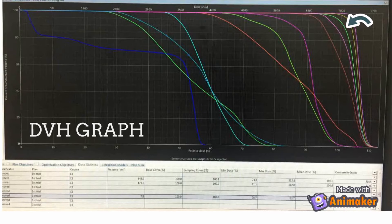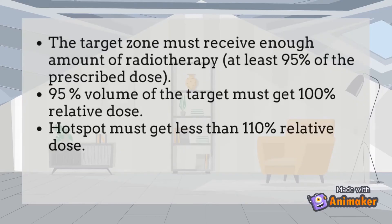The target zone must receive enough radiotherapy — at least 95% of the prescribed dose. 95% of the volume of the target must receive 100% of the relative dose. The hotspot must receive less than 110% of the relative dose.